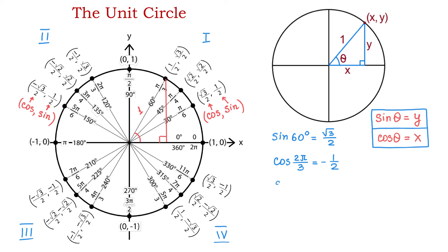To find sine of 270 degrees: on the unit circle, 270 degrees is on the negative y-axis and the value of sine there is −1. So sine of 270 degrees equals −1. To summarize: to find cosine of an angle on the unit circle, read the x-coordinate of the corresponding point; to find sine, read the y-coordinate. Depending on the quadrant, the values of sine or cosine can be positive or negative.